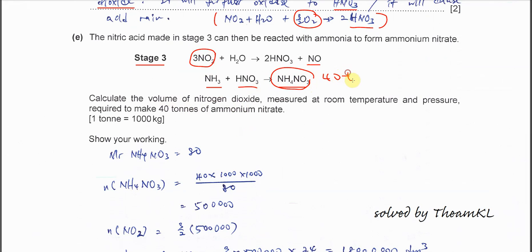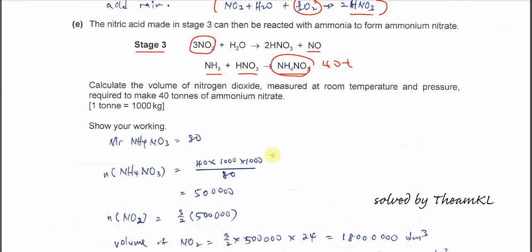In this question you need to calculate the volume of NO2 that's needed to make 40 tons of ammonium nitrate.